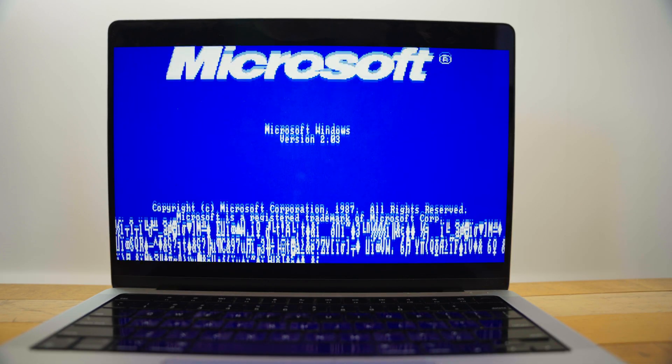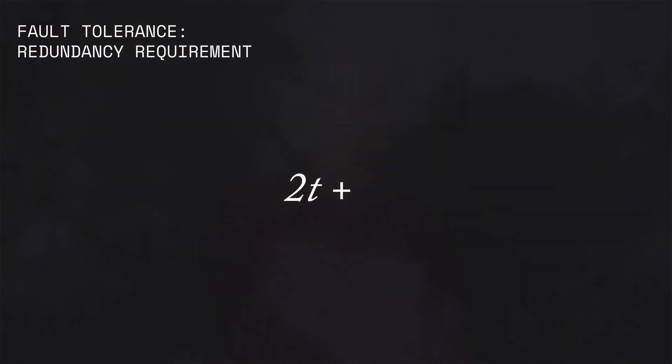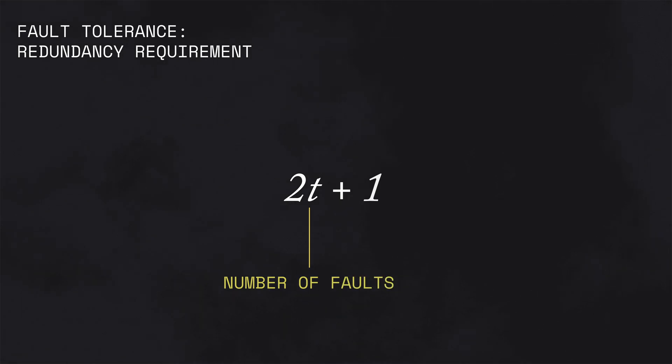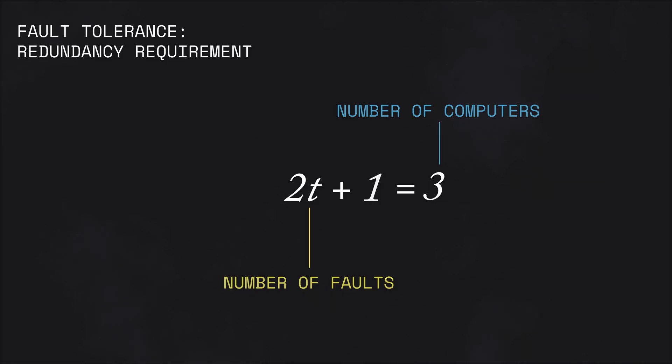Stuff can go wrong. We call stuff going wrong 'faults.' Faults come in all sorts of flavors: computer unplugged, bad software update, configured the wrong bleep bloop in config.json. Engineers will know this stuff will happen and plan for it by designing algorithms that are fault tolerant. In distributed systems, we express fault tolerance as a ratio of redundancy, like 2t+1, which means you need 2 times the number of faults you want to handle, plus 1 more. So with 3 players, we're able to handle at most 1 fault.